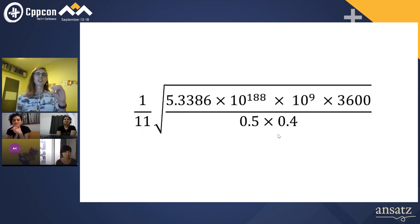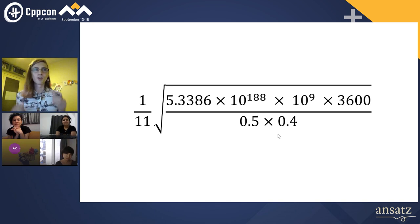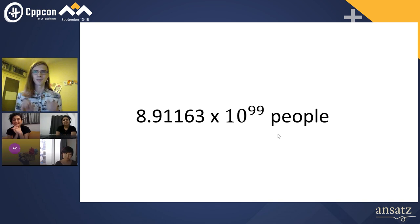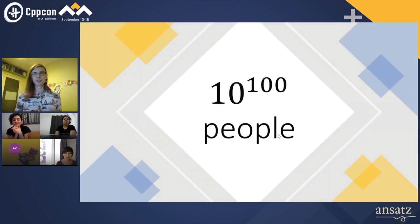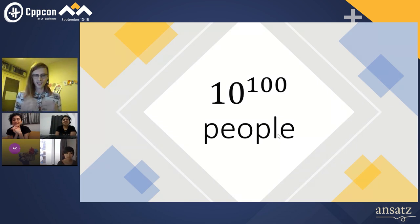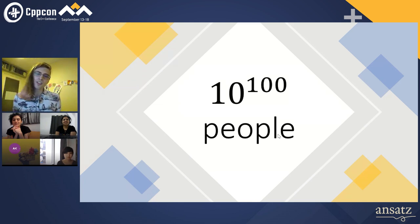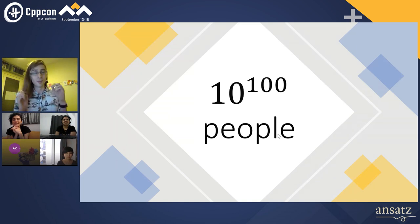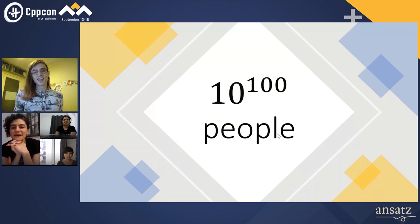If we plug that into this equation, we can work out the number of people required to slap a Google power station to generate this much energy, which is 8.91163 times 10 to the 99 people. I'm going to round this up to 10 to the 100, because it's almost there — what's an order of magnitude between friends? And it turns out 10 to the 100 is a number with a special name. The number of people required to slap a Google power station to power their data centers from now until the end of time is one Googol.